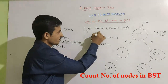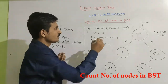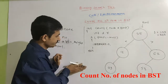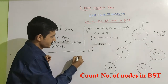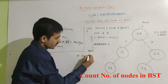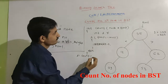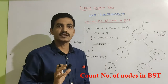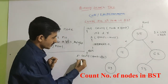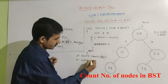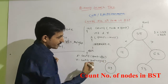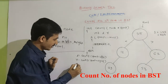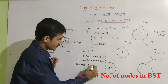So here we write two variables: one, L, will count the total number of nodes in the left side; the other, R, will count the total number of nodes in the right side. In the else part, L is equal to count(temp->left), so L will count the total number of nodes in the left sub-branch. R is equal to count(temp->right), which counts the total number of nodes in the right sub-branch. Then the function returns 1 plus L plus R.